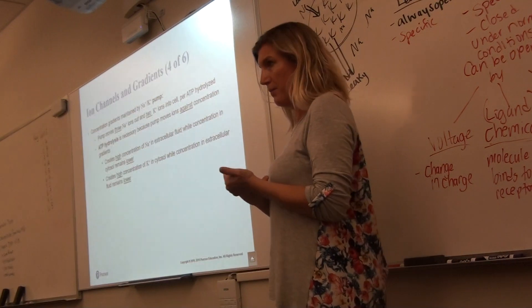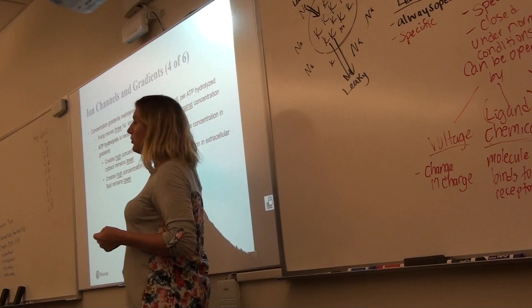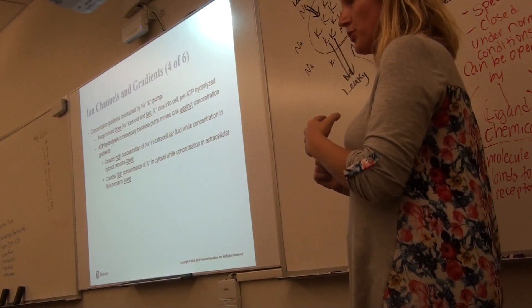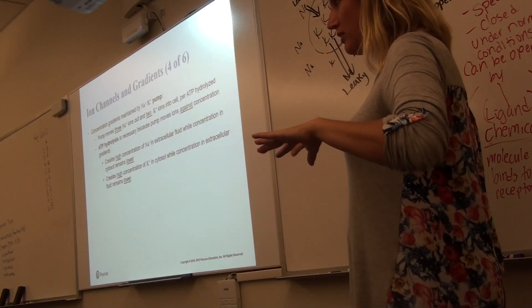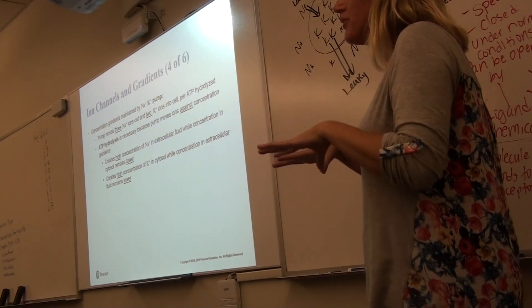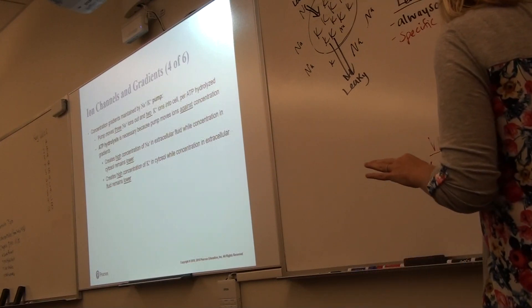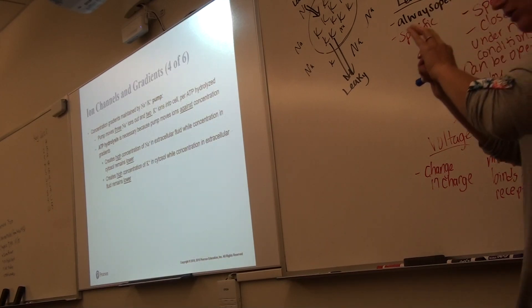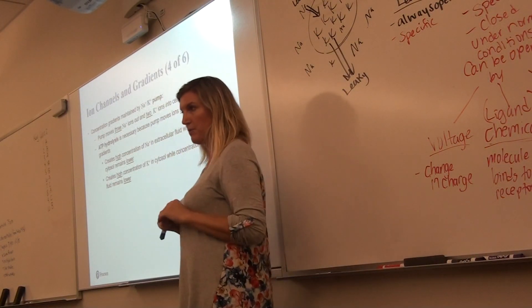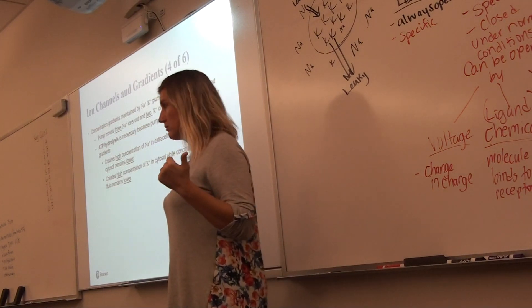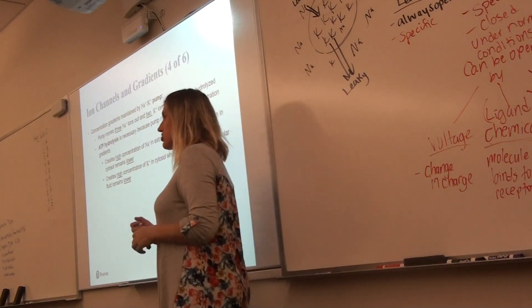The sodium-potassium pump works by pumping three sodium ions out and two potassium ions in for every crank it takes — it pumps an uneven number, which is how the cell stays negative. It pumps out more positive charges than it keeps. This sodium-potassium pump is what maintains the resting membrane potential. After the cell gets excited and contracts, the sodium-potassium pump returns the cell to normal, creating a higher concentration of sodium outside and higher concentration of potassium inside.